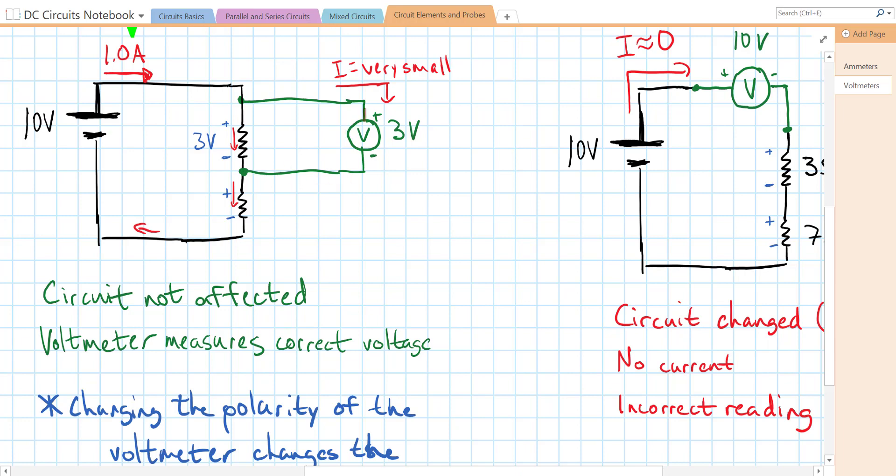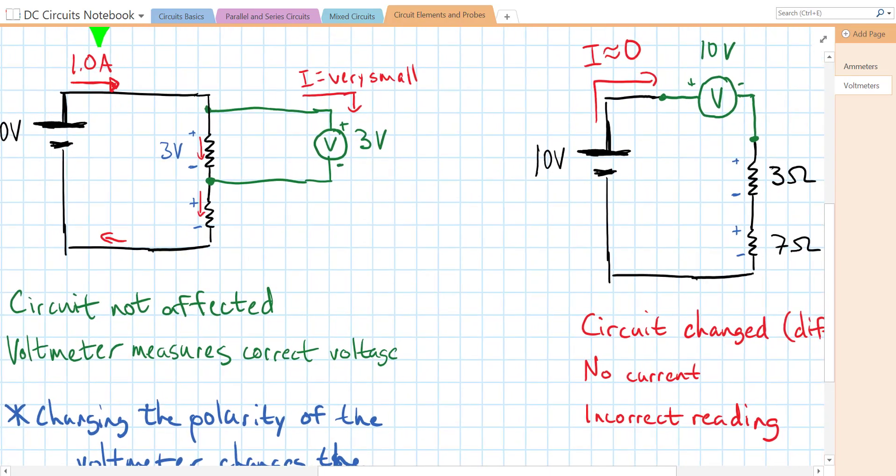And since the voltage is constant in parallel, we haven't changed the circuit at all, we're still going to measure 3 volts across this resistor. So connect our voltmeter in parallel.